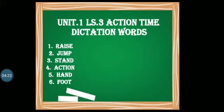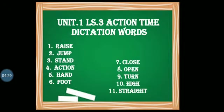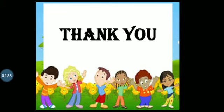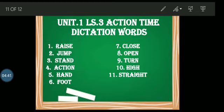Sixth one is: foot, f-o-o-t. Seventh one is: close, c-l-o-s-e. Eighth one is: open, o-p-e-n. Ninth one is: turn, t-u-r-n. Tenth one is: high, h-i-g-h. Eleventh one is: straight, s-t-r-a-i-g-h-t.